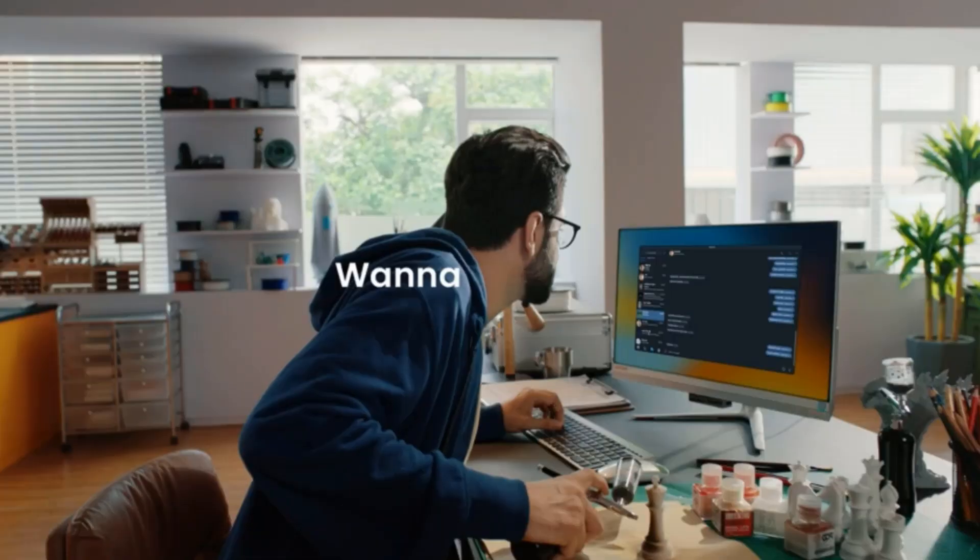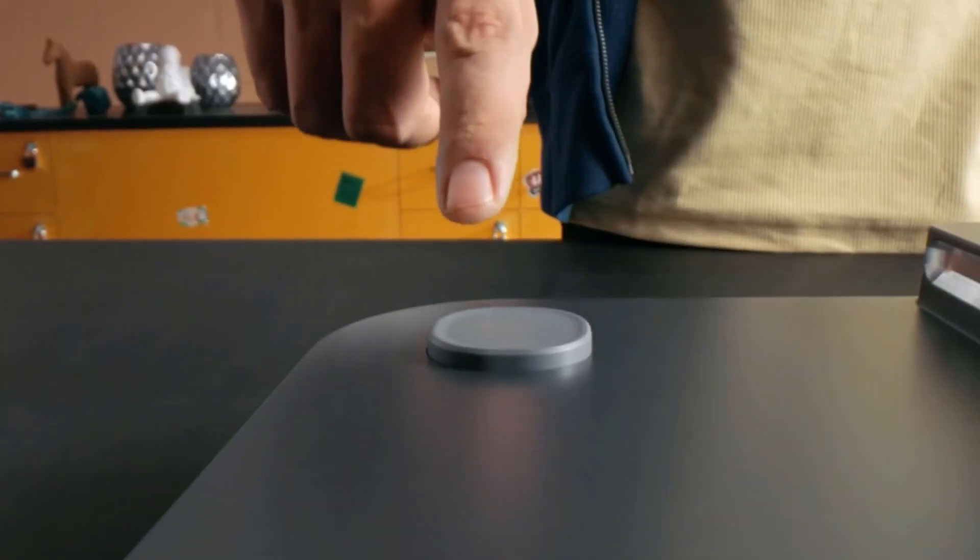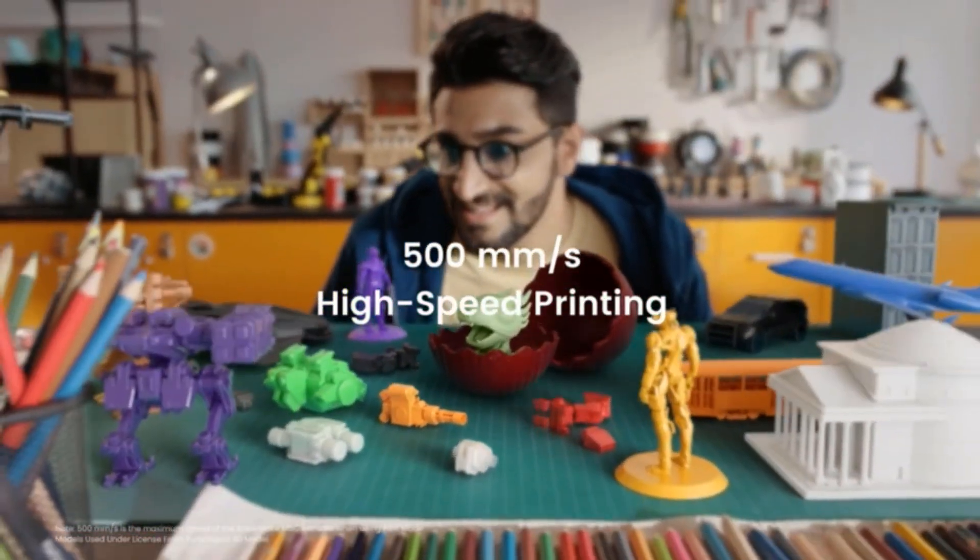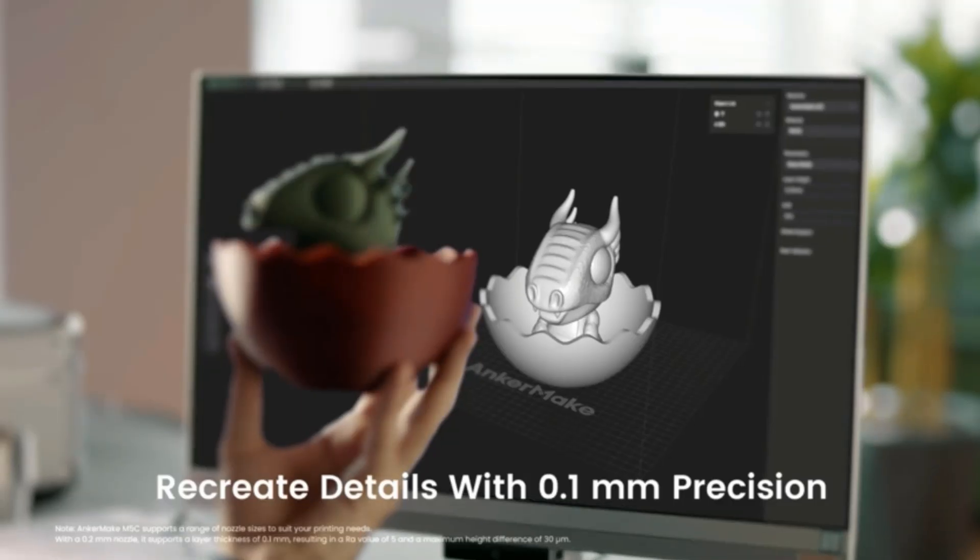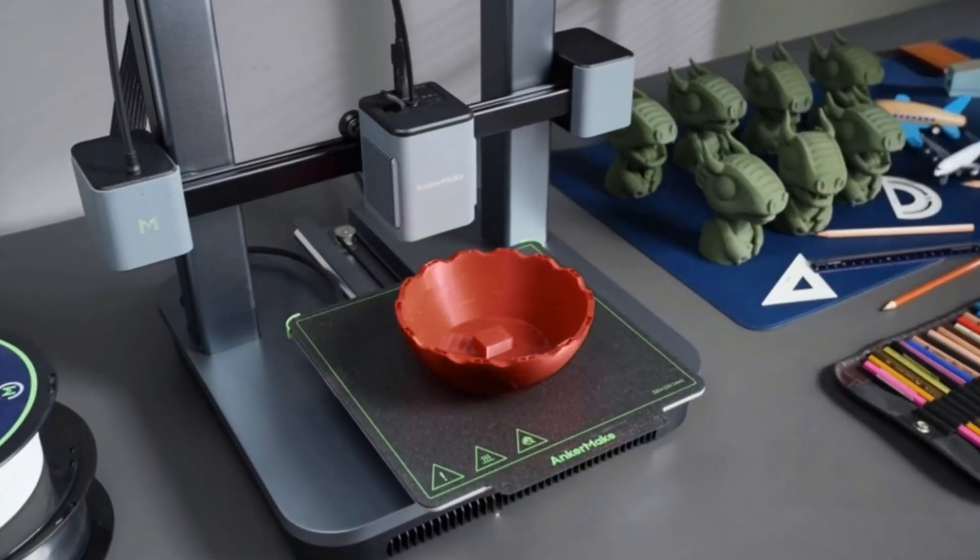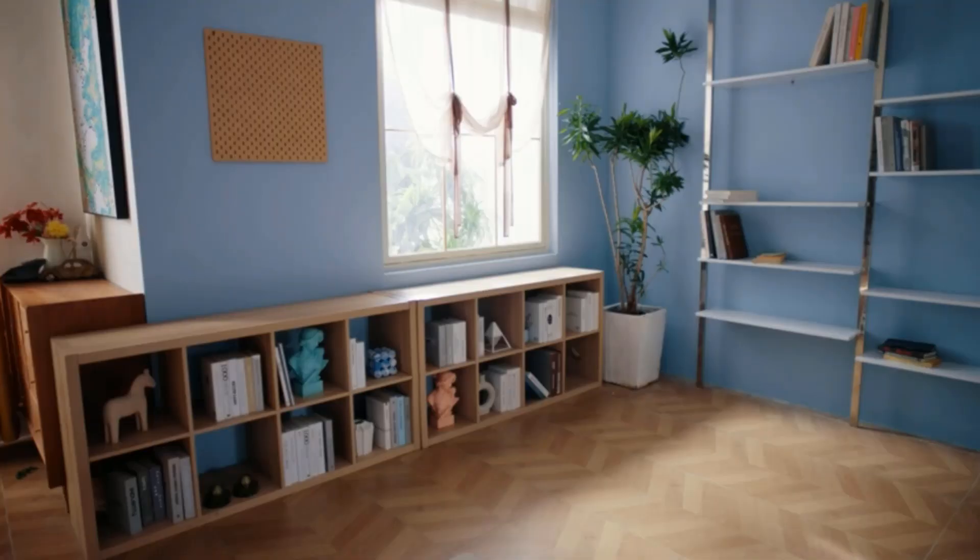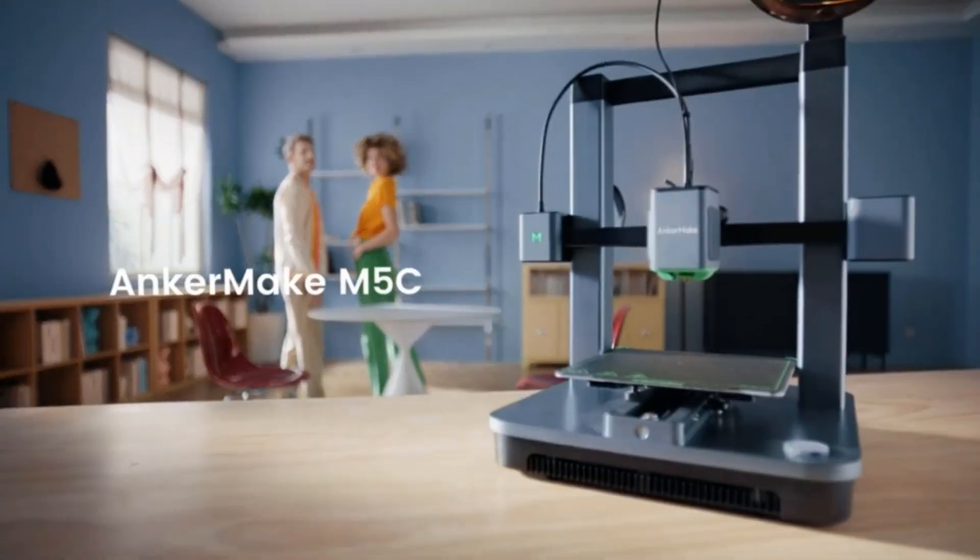AnkerMake provides its own software for print preparation, but according to the company you can alternatively use Ultimaker Cura or PrusaSlicer. The M5C's included toolkit adds even more value for people just starting a 3D printing hobby, with Allen wrenches, a filament cutter, and an extra extruder nozzle. Overall, the $400 AnkerMake M5C is an excellent choice for both beginners and 3D printing veterans.